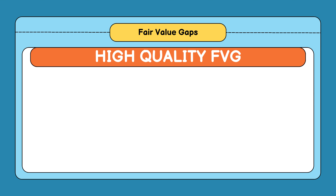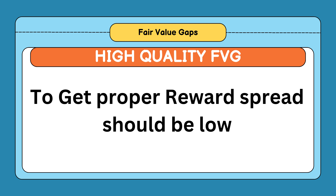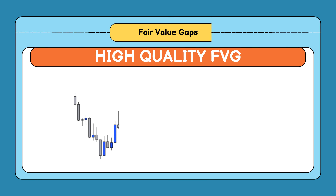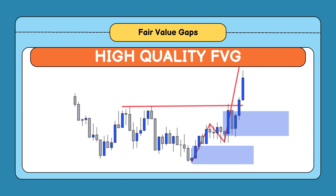Let me explain the conditions required to identify a high-quality fair value gap and order block. Because we are entering on the 15-minute timeframe, you need low spread to get a proper risk-reward ratio. If after breaking structure the market breaks its next structure again without fulfilling its fair value gap, then we will avoid this type of entry. In a scenario like this, you can see that the market is breaking its structure but also forming a structure within a structure — in these types of setups, we will use this order block to take trades.